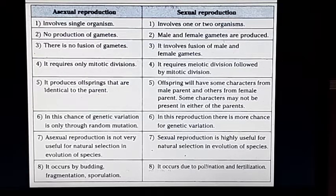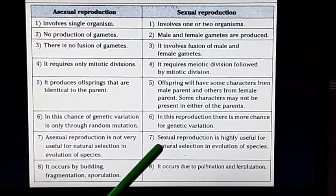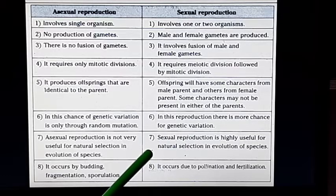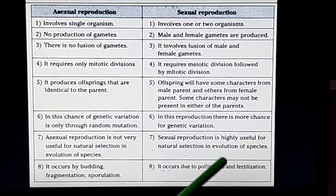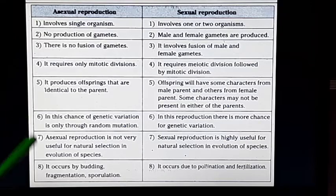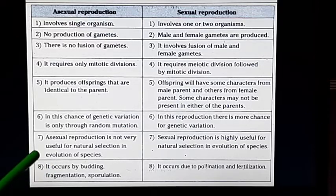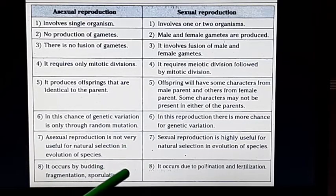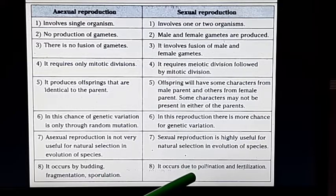In asexual reproduction, there is no role of natural selection in the evolution of species. Whereas in sexual reproduction, natural selection is possible, making offsprings more adaptable and more evolved species are developed. Modes of asexual reproduction include budding, fragmentation, sporulation, and vegetative propagation. In sexual reproduction in plants, pollination occurs first and finally fertilization occurs. Fertilization is a common step in both animals and plants.